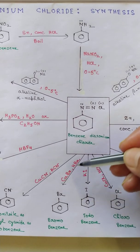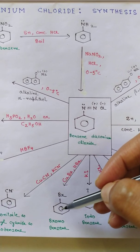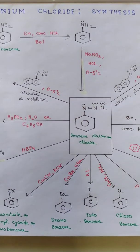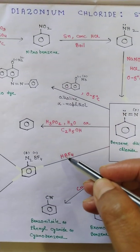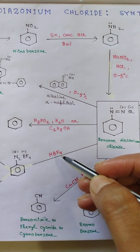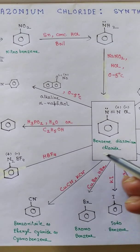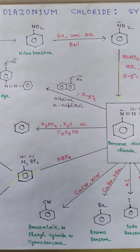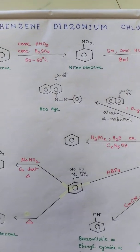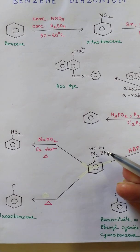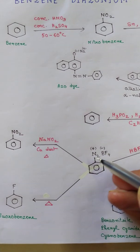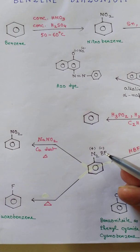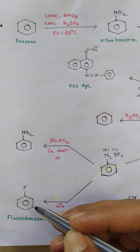If we apply CuBr, HBr, we have bromobenzene. Now for fluorobenzene, first we have to give HBF4, when the benzene diazonium chloride salt gets converted to benzene diazonium fluoroborate, which when heated, BF3 comes out, dinitrogen comes out, and one fluorine is left and it gives fluorobenzene.